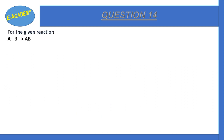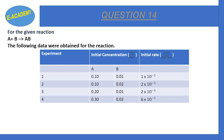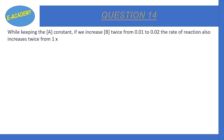Question number 14: For the reaction A + B → AB, the following experimental data were obtained across four experiments giving initial concentrations of A and B and the initial rate. While keeping the concentration of A constant, if we increase B two times from 0.01 to 0.02, the rate of reaction also increases twice from 1×10⁻⁵ to 2×10⁻⁵.